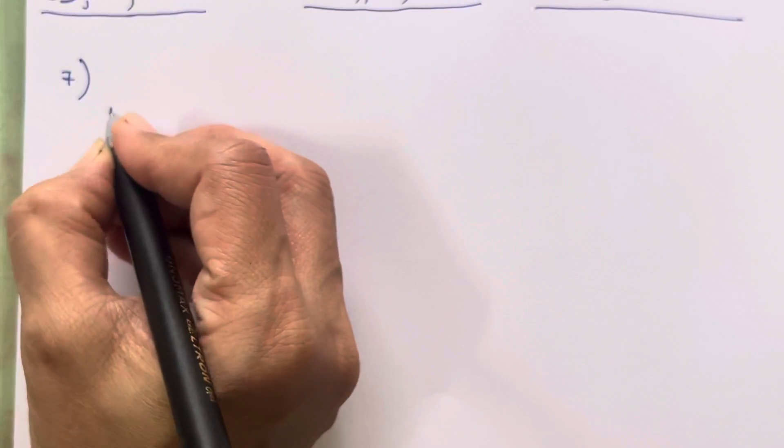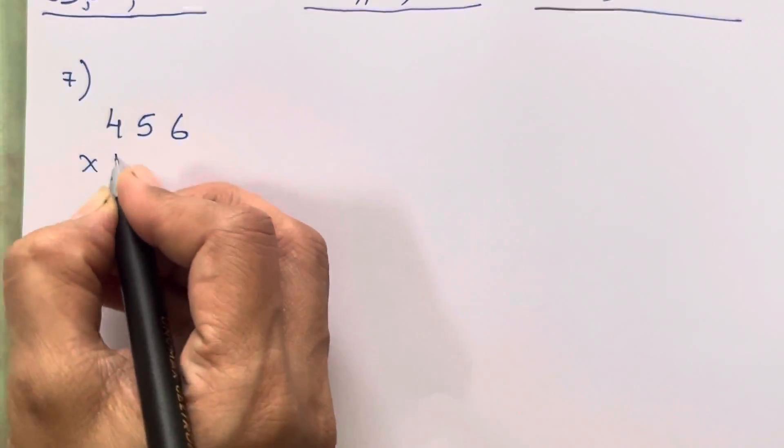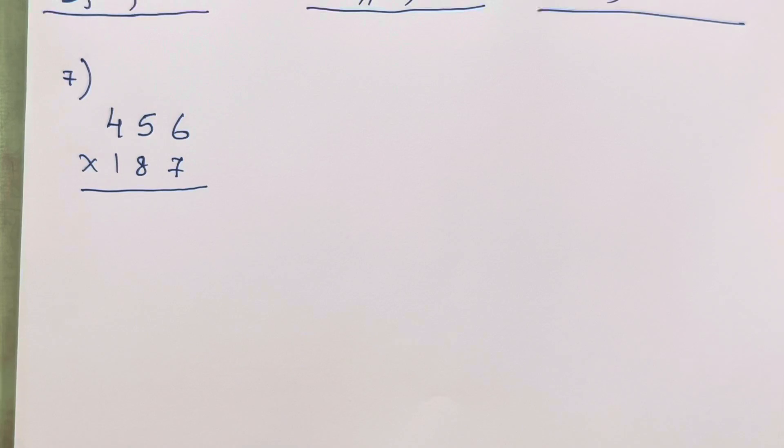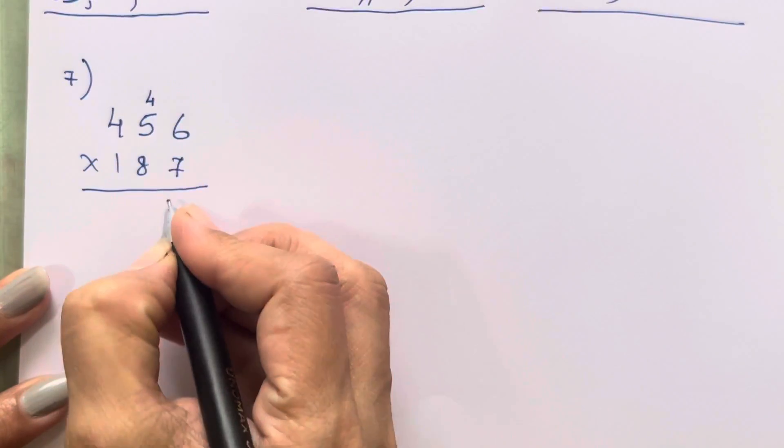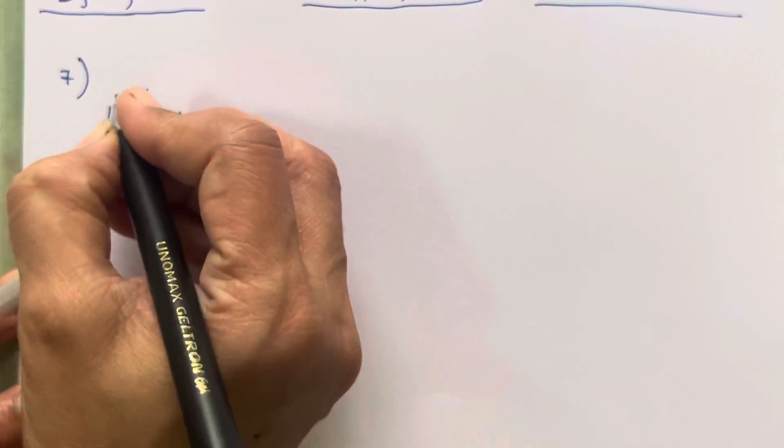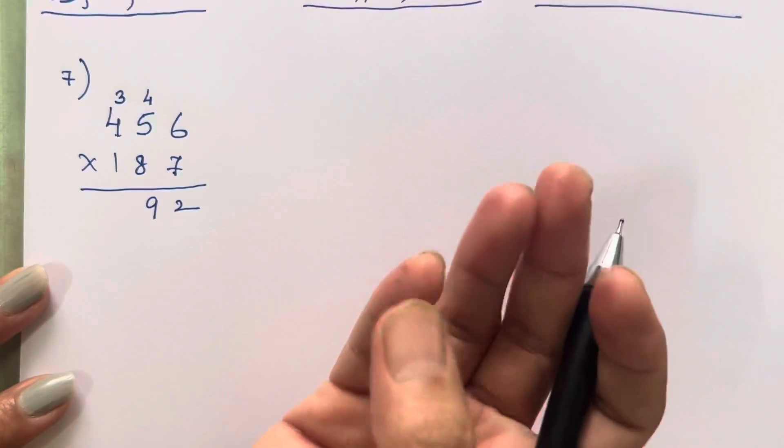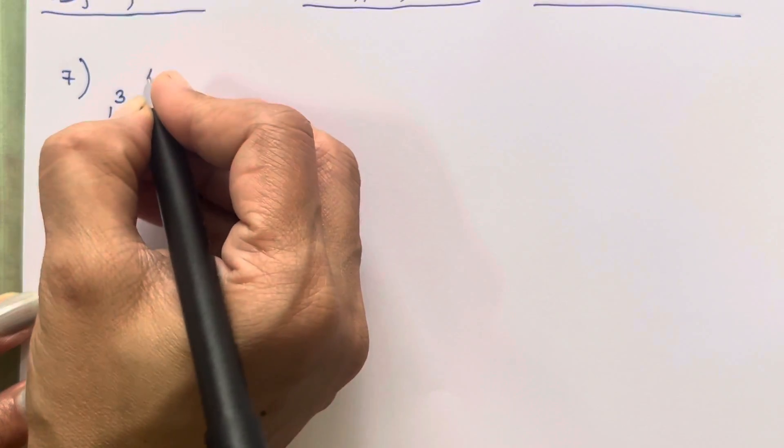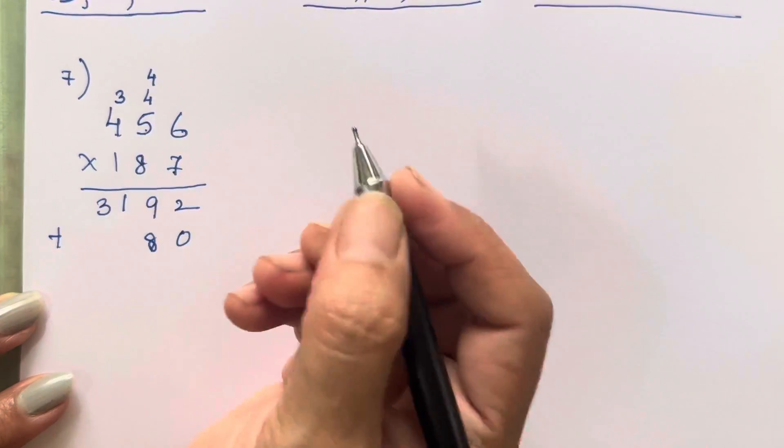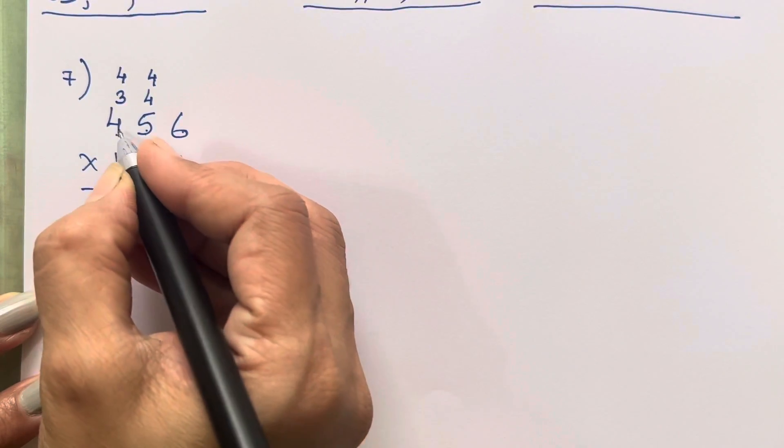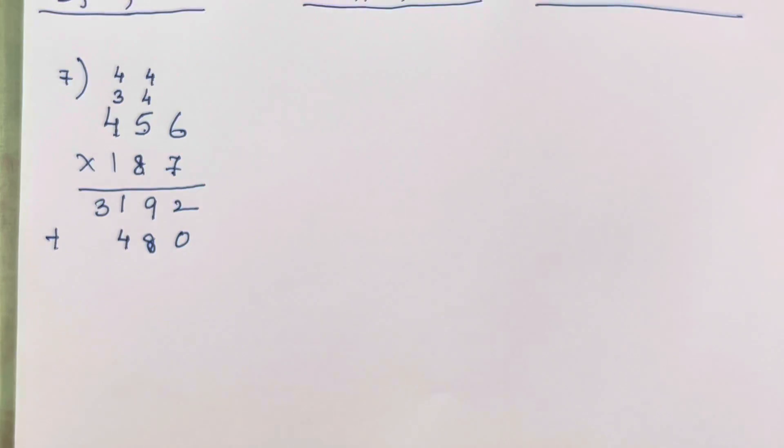Now let's move on to the 7th one. That is 456 into 187. So 7 sixes are 42. 5 sevens are 35, 36, 37, 38, 39. 4 sevens are 28, 29, 30, 31. Plus 0, 8 sixes are 48. 8 fives are 40 plus 4, 44. 8 threes are 32, 33, 34, 35, 36.